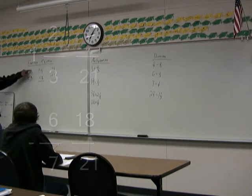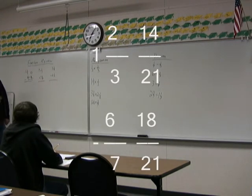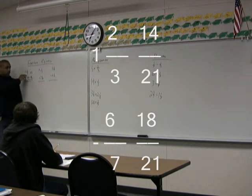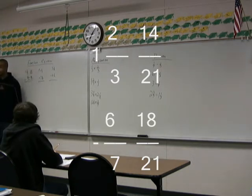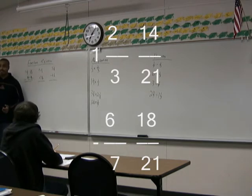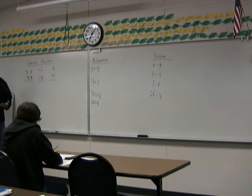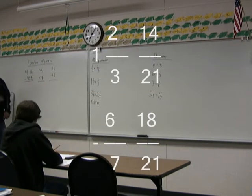How are we going to get this number? Same way — three goes into twenty-one seven times two, fourteen. Fourteen minus eighteen — can't do it. You got to borrow from the one. You got to borrow from the one.